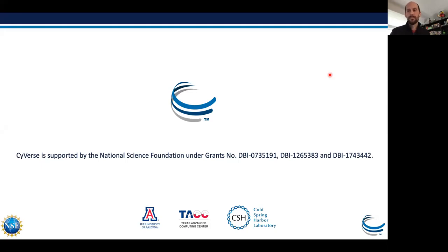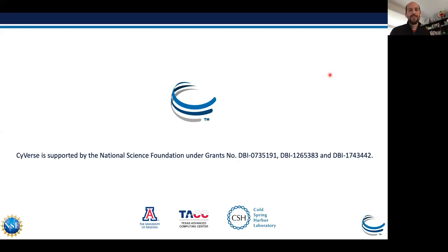How accurate is PlantCV in estimating above-ground biomass using only visual images? Our paper in Molecular Plant in 2015 with Setaria showed that for Setaria it was quite accurate — the linear model had an R-squared value of greater than 0.9. I've seen some other species where it doesn't work quite as well, but it's usually quite robust. And that's not just PlantCV — lots of people have shown that you can estimate above-ground biomass pretty well with image data, as long as you measure sort of the right component traits to build a model around.